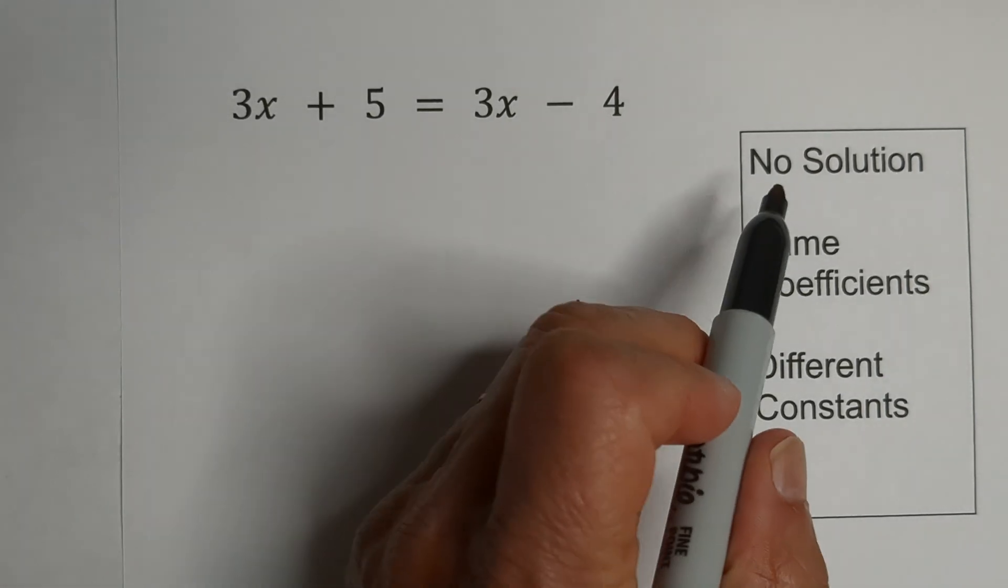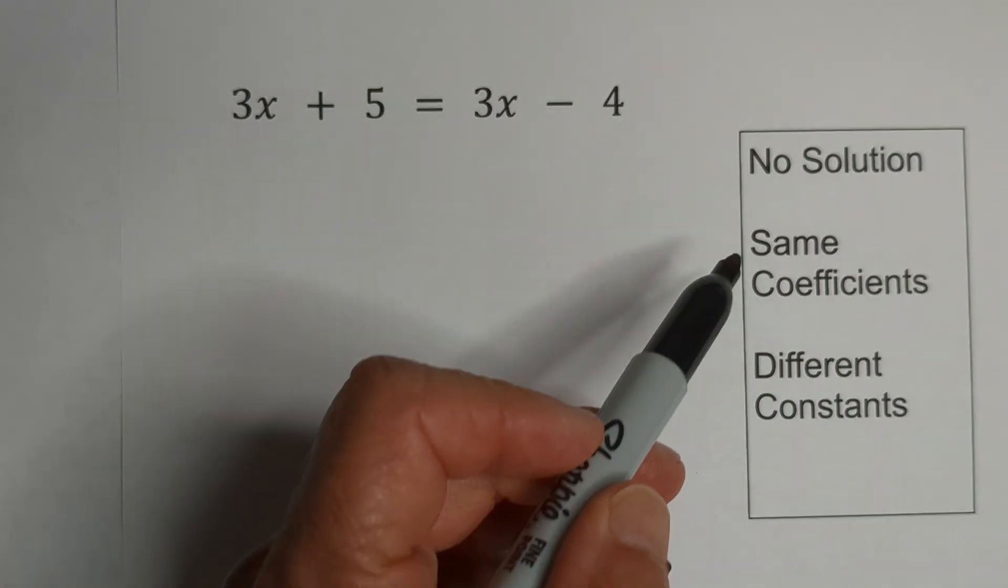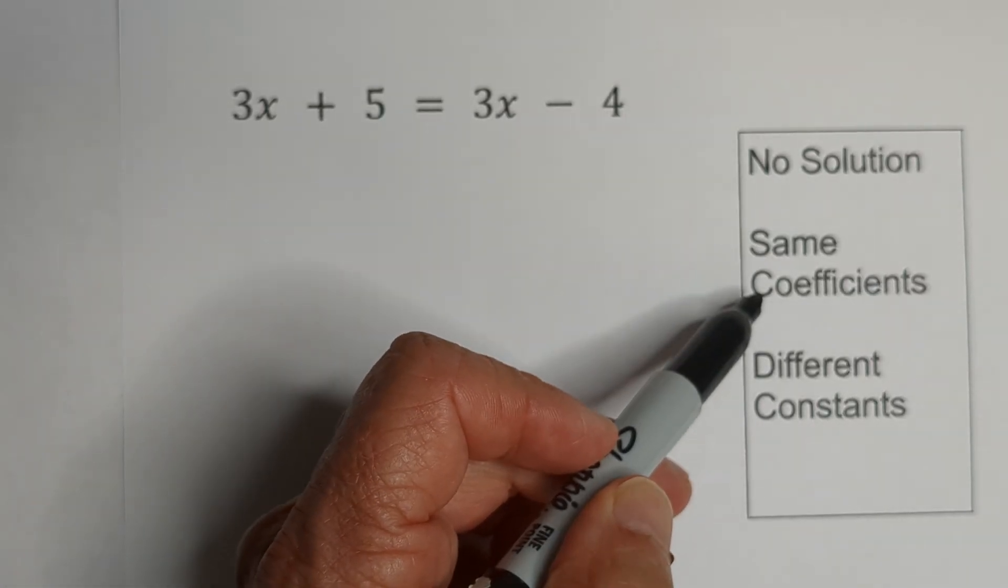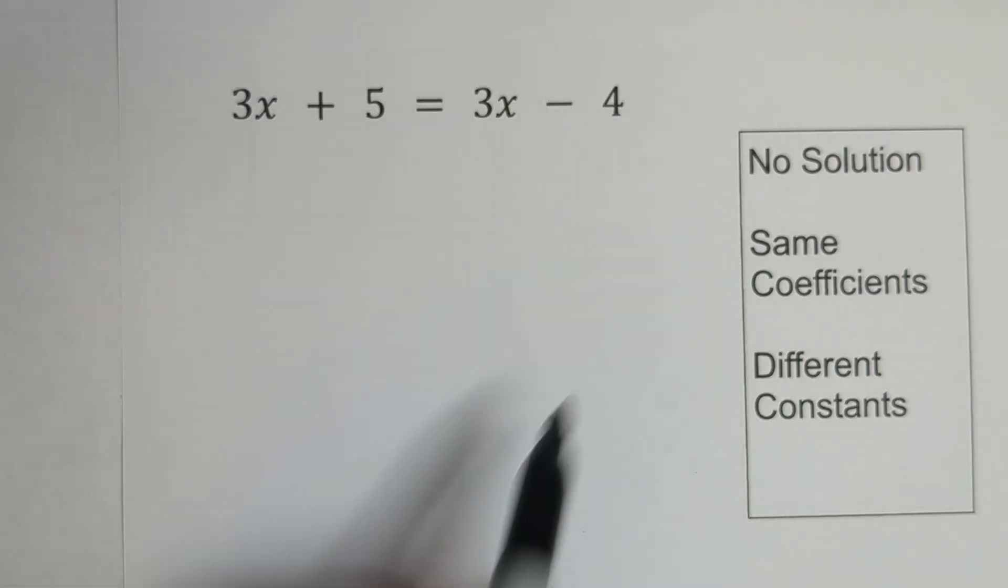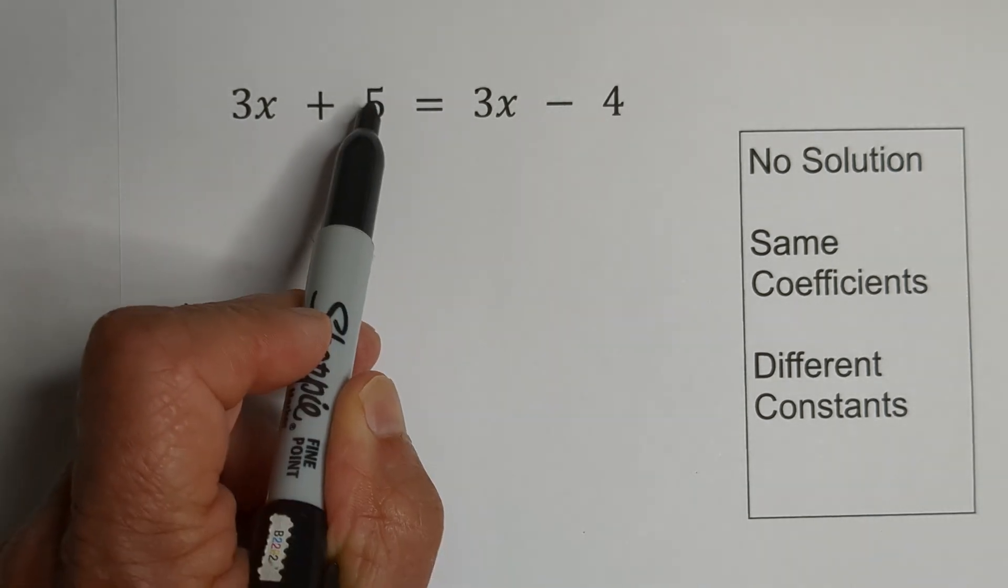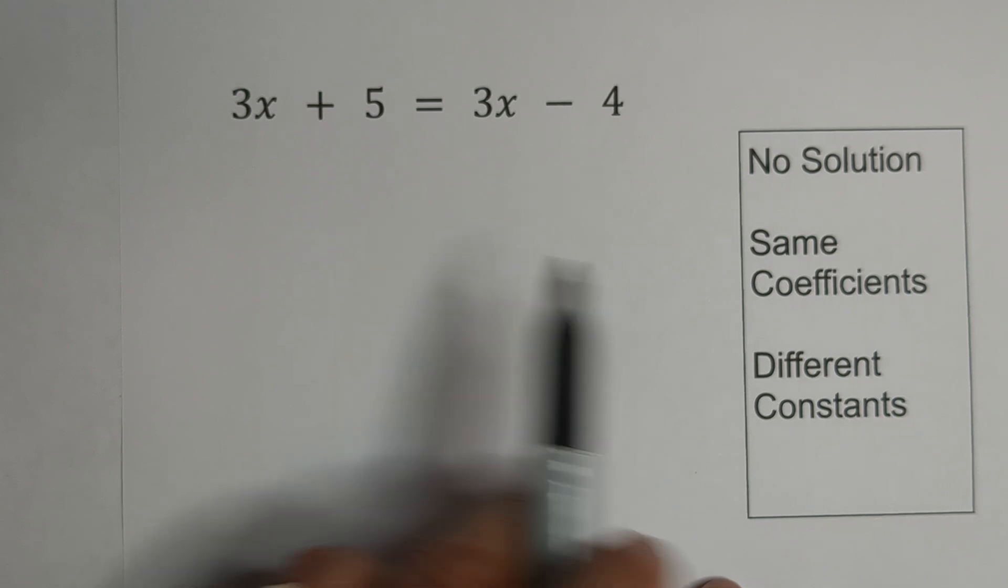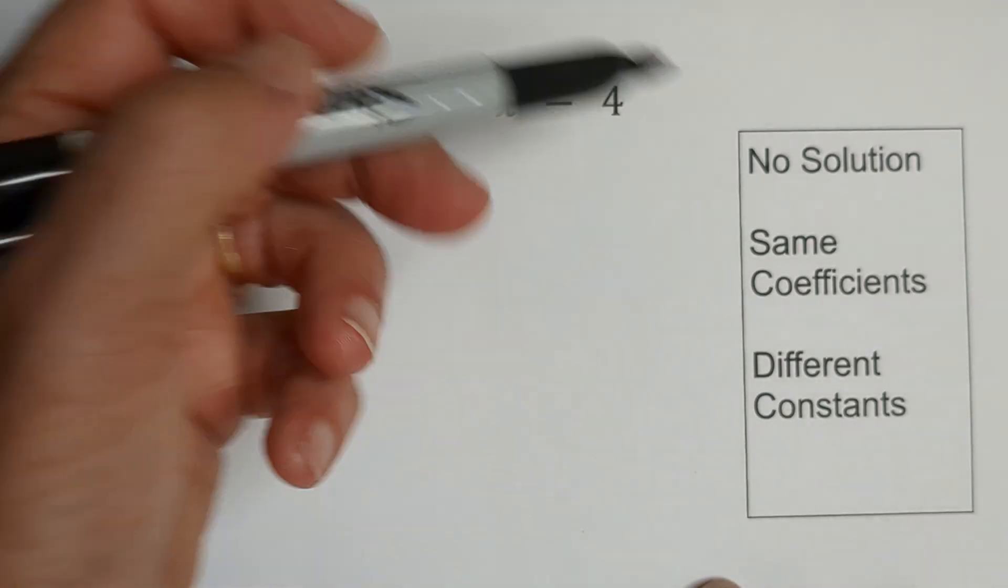Now let's look at no solution. Whenever, once you simplify, you see the same coefficients but different constants, you're going to have no solution. Here, coefficients are the same, constants are different. So I'm going to solve it and see how it's no solution.